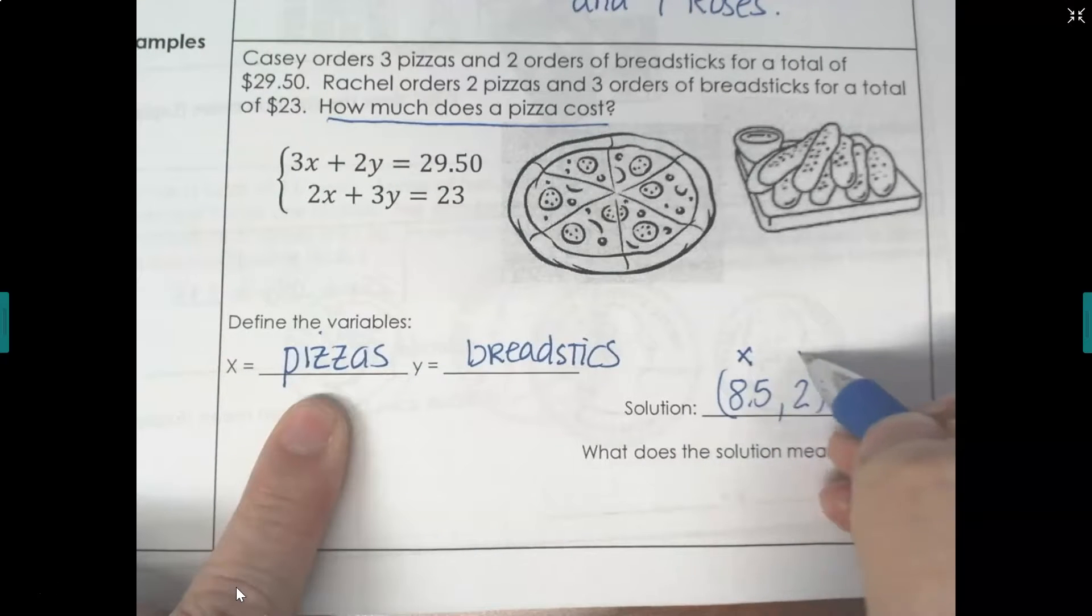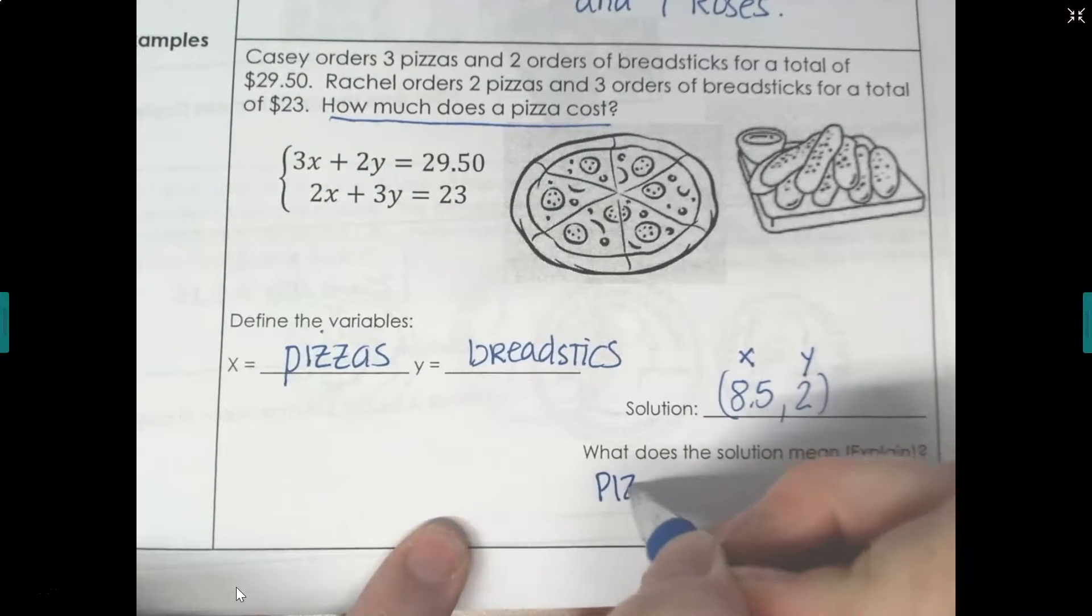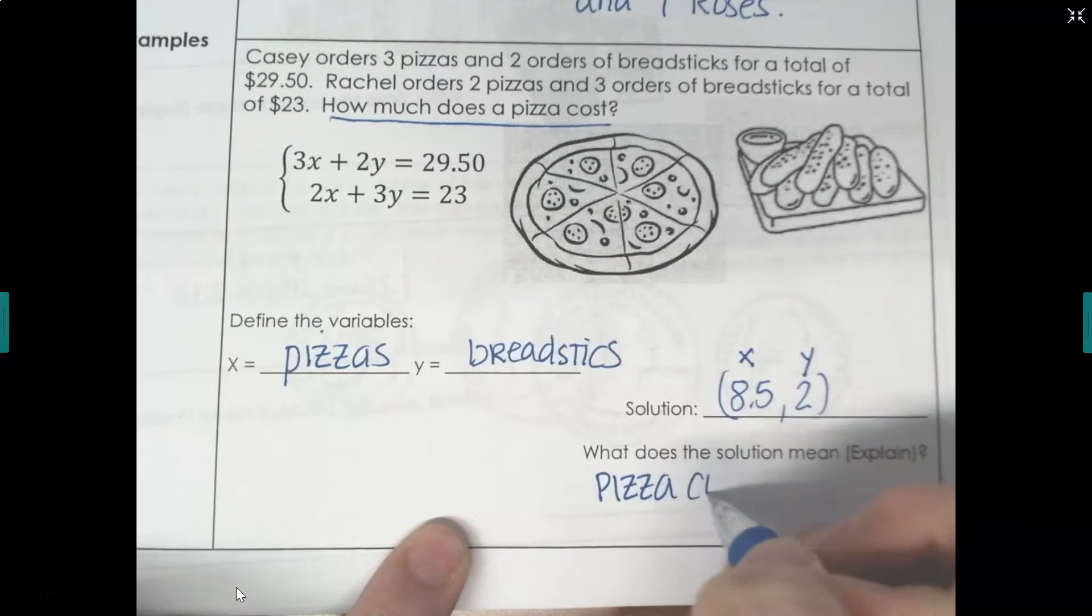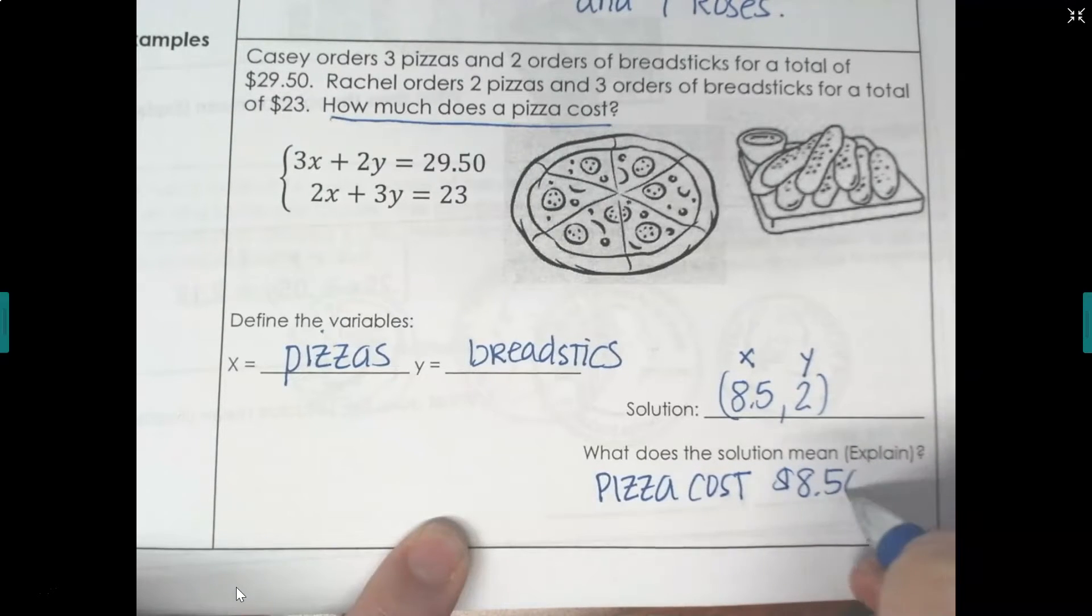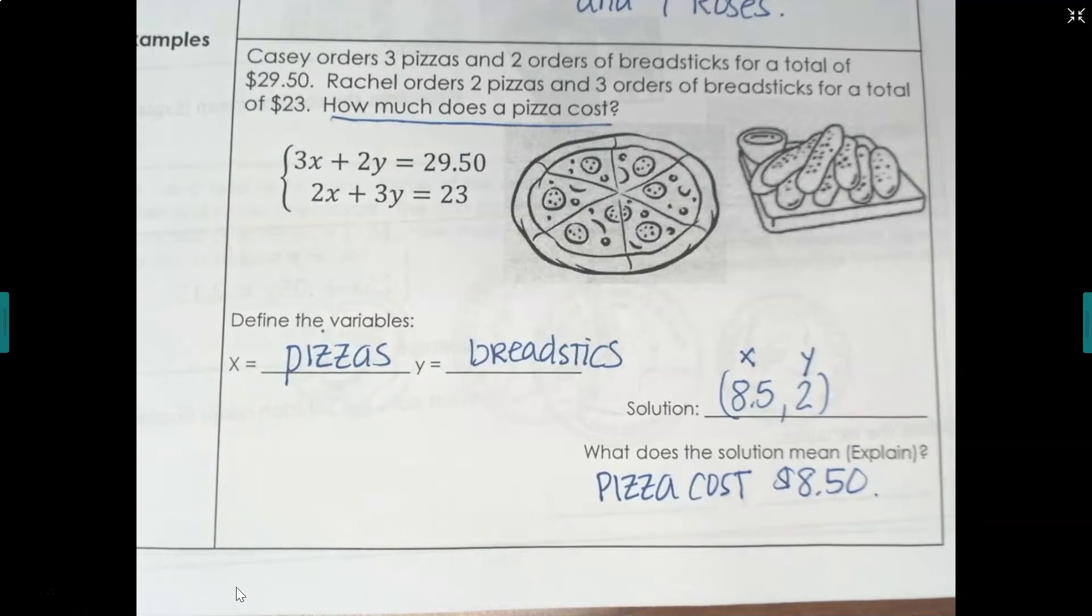Pizzas are the x value. This is my x value. This is my y value. That means pizza costs $8.50. The breadsticks cost $2, but the question really only asked how much does pizza cost.